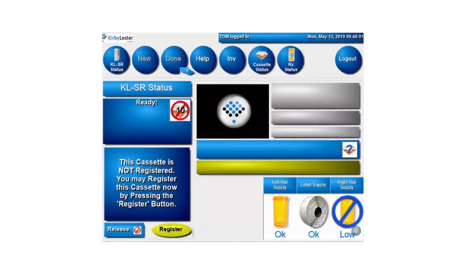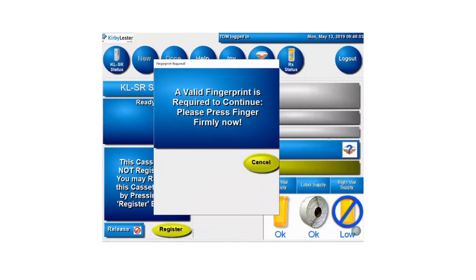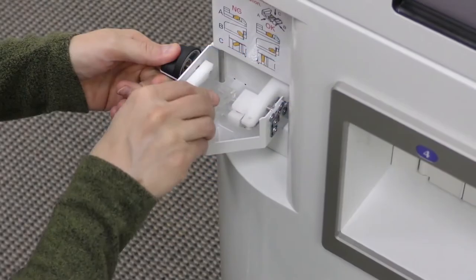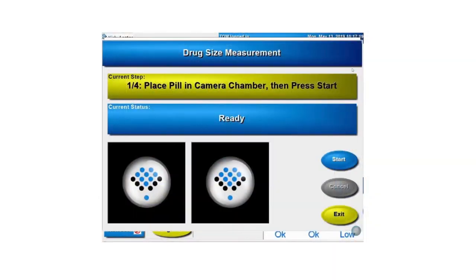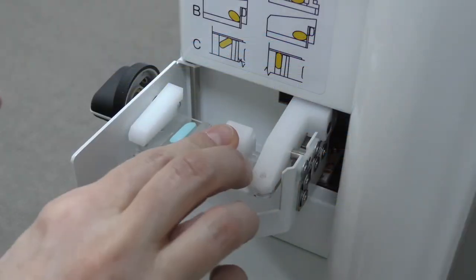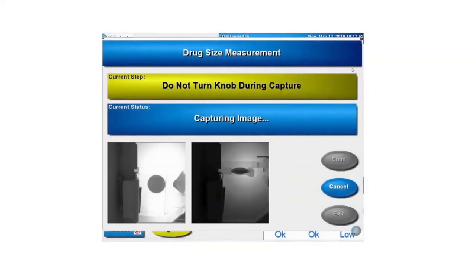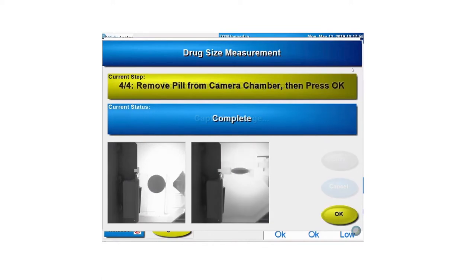The medication database includes thousands of common tablet and capsule dimensions, but when you need to automate a new pill that's not in the database, the KLSR camera chamber takes pinpoint measurements and stores the data, so change NDCs as often as needed, and as often as the market conditions or seasonal changes demand.